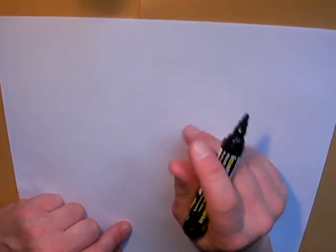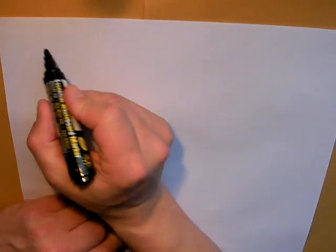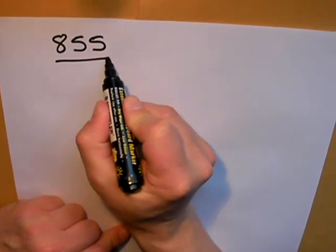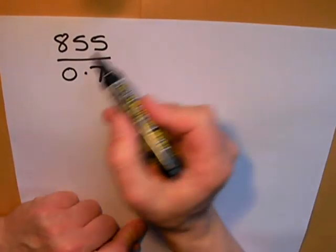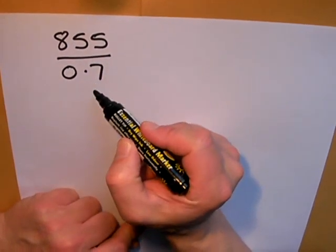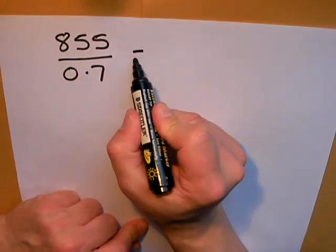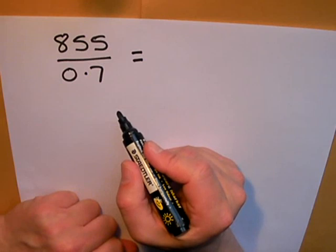I want to do an example of dividing by a decimal. The question I want to do is 855 divided by 0.7. Now I could divide by a decimal, but I want to make life a little bit easier for myself, so I'm going to think about what fraction or what division sum is exactly the same as 855 divided by 0.7.